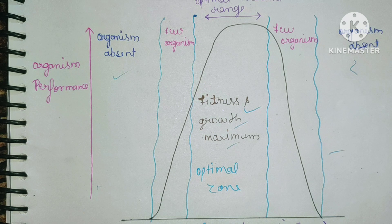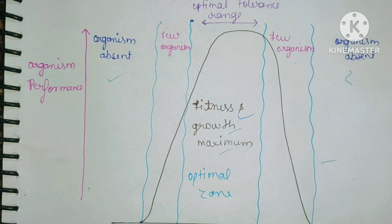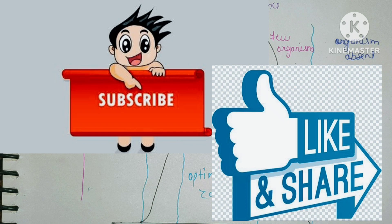Ecological rules are very easy — you just need to learn them a few times. We have studied four rules: Bergmann's rules, Allen's rules, Gloger's rules, and Shelford's Law of Tolerance. If you have any doubt, you can comment. You can also join my Telegram group. If you like my video, please like, share, and subscribe. Thank you so much for watching.